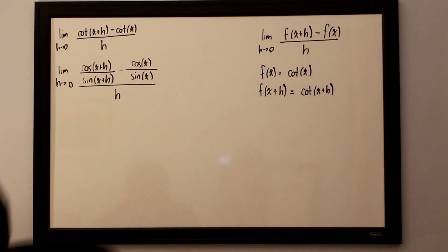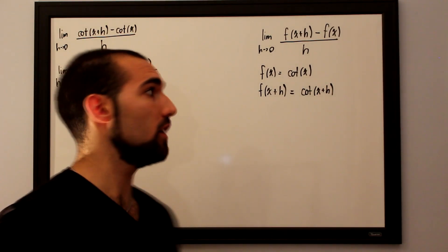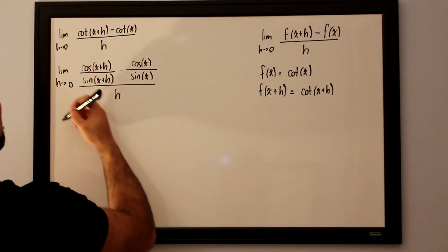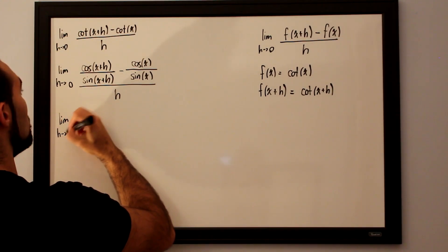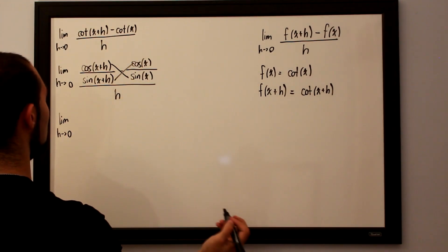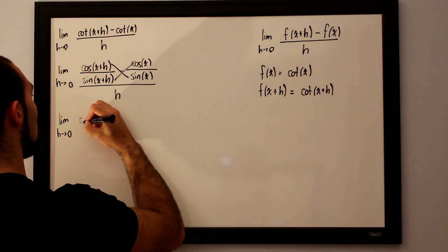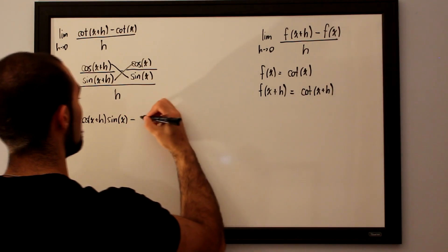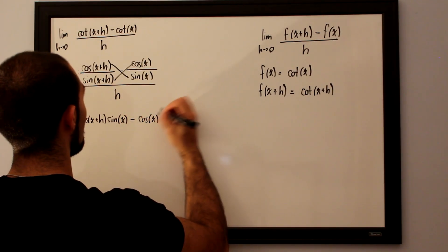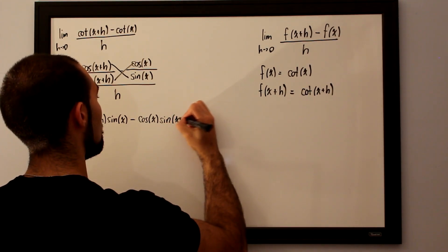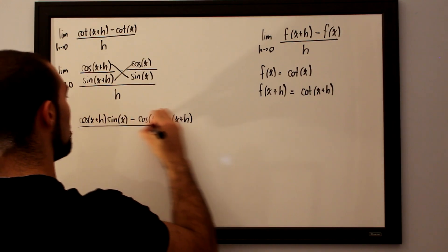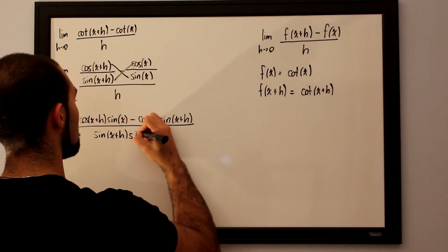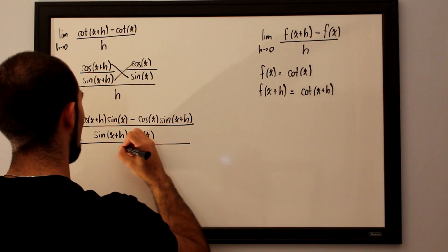Just as we did in previous examples, we want to join these under a common denominator and drag whatever is in the denominator of the numerator into the denominator. So we will take the limit as h approaches 0 and multiply across: we'll be left with cosine of x plus h multiplied by sine of x, minus cosine of x times sine of x plus h, all divided by sine of x plus h times sine of x, furthermore divided by h.